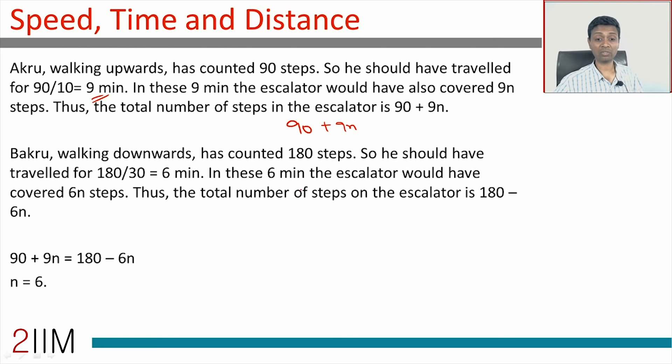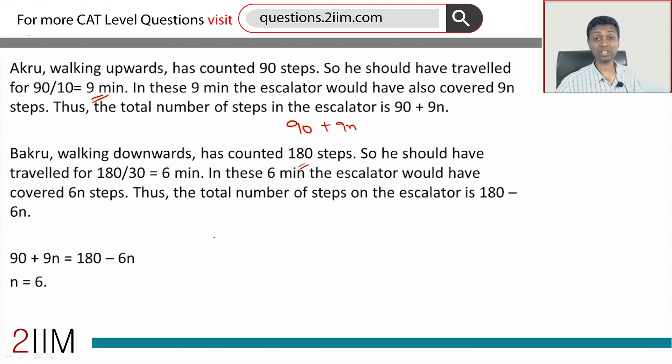Now Bakru travels 180 steps. He travels at 30 steps a minute, or Bakru travels for 180/30 = 6 minutes. In this 6 minutes, the escalator would have done 6N steps. But remember, Bakru is walking downwards, against the escalator. Or he would have traveled 180 - 6N. Going up or coming down, the number of steps should be same. Or 90 + 9N, which is what Akru would have traveled, is the same as 180 - 6N.